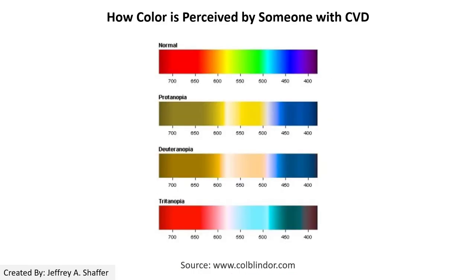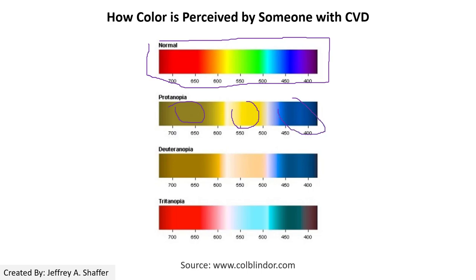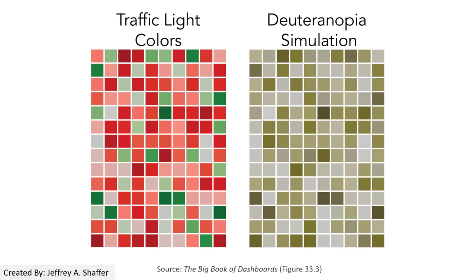This is how people with CVD perceive different colors and light. Normal people can distinguish many hues across wavelengths, but people with CVD may only be able to tell two or three types of hues. This becomes especially problematic with traffic light colors — green and red — which people with CVD really cannot distinguish.